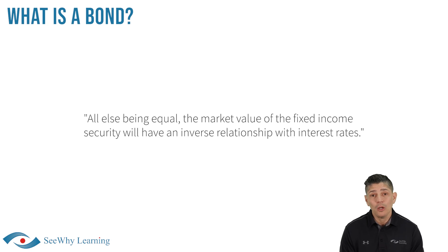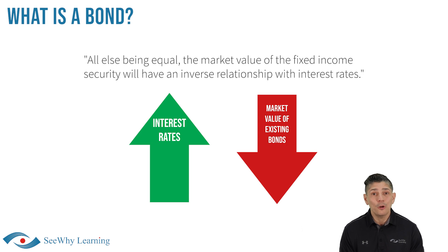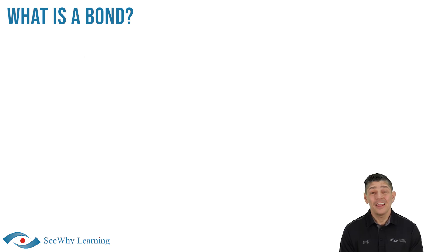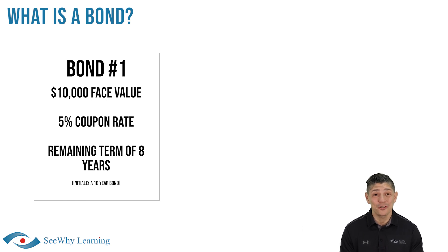The attractiveness of the bond's features, such as its coupon rate, compared to other similar-term bonds can also impact its market value. A general market principle attributed to fixed income investments is as follows: all else being equal, the market value of a fixed income security will have an inverse relationship with interest rates. In other words, if interest rates increase, it will put downward pressure on the market value of existing bonds, and vice versa. For example, suppose you own a bond with a $10,000 face value, a 5% coupon rate, that was initially a 10-year bond but issued 2 years ago, and therefore has a remaining term to maturity of 8 years.